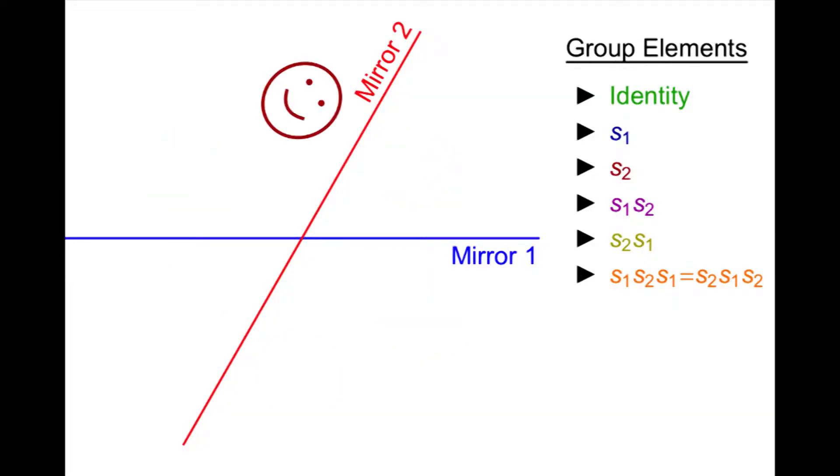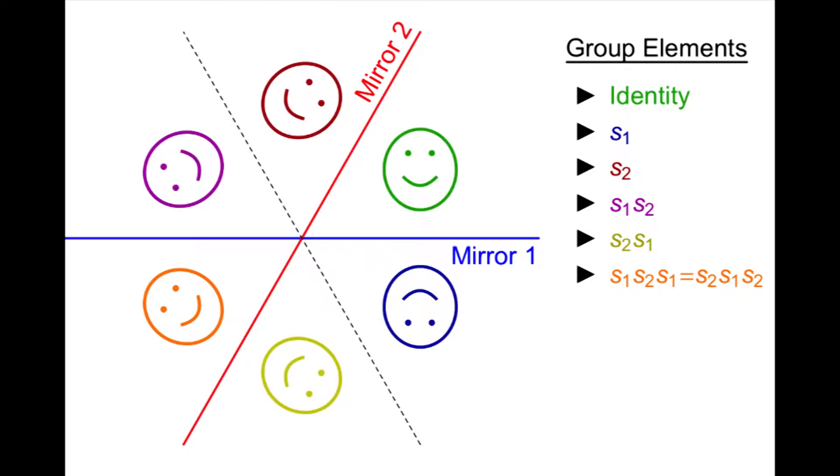But wait, I said there are only six elements. There are. S1, S2, S1 is the same as S2, S1, S2, for our six distinct elements.